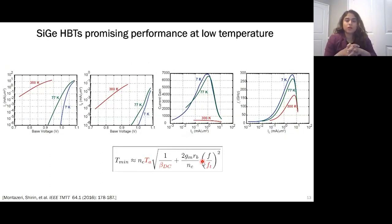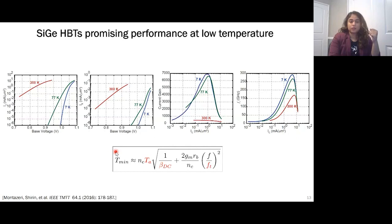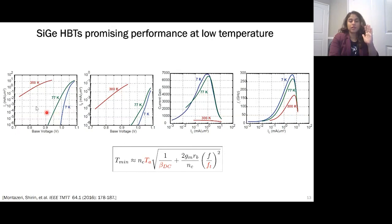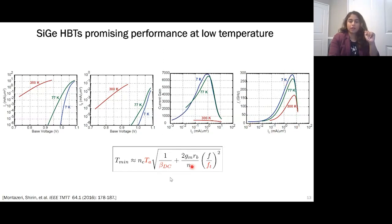To answer that question, we cooled down a couple of devices and measured their performance at low temperature. Here you can see four plots: the collector current as a function of base voltage (Gummel curves) at three different temperatures — room temperature, 77 K, and 7 K. The slope improves by cooling down, meaning transconductance improves. The current gain also dramatically improves at 7 K, and the unity gain frequency fT improves significantly as well.